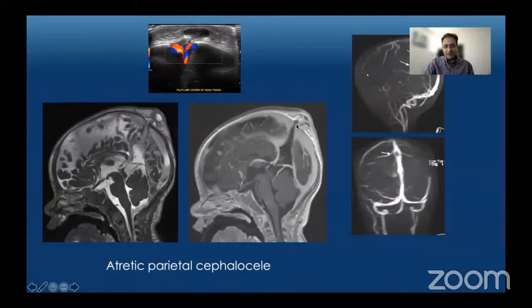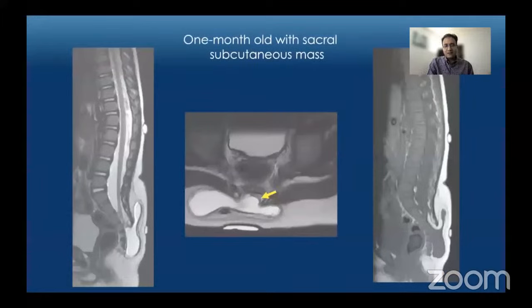On MR venogram images we see focal splitting of the superior sagittal sinus, related to where the tract bisects it to reach the calvarial defect. The next case is a spine case: a one-month-old child presenting with a sacral subcutaneous mass.